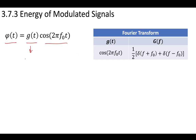The original signal is typically going to have some bandwidth b — for example, a voice signal contains frequencies from 0 to 20 kilohertz. The typical way to modulate is to choose a carrier frequency f-naught greater than or equal to the original bandwidth. This spreads out the frequency components in the frequency domain so that we don't get overlapping.